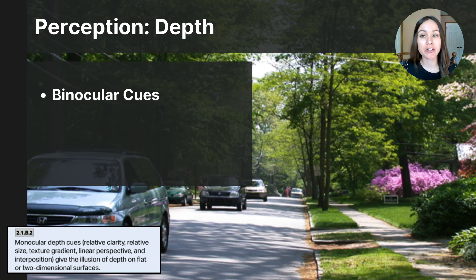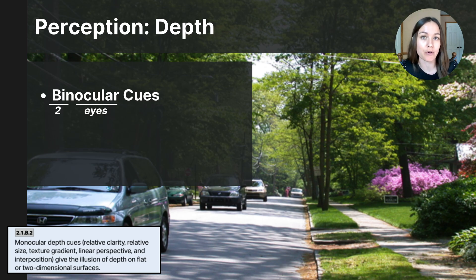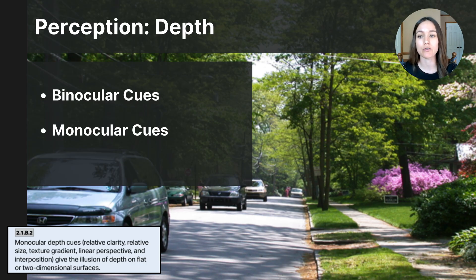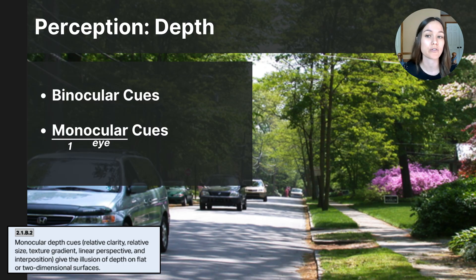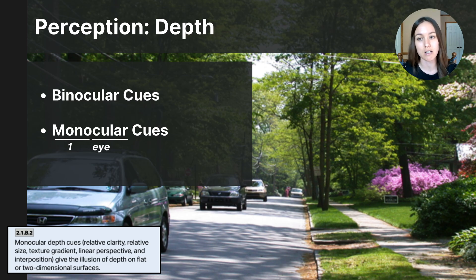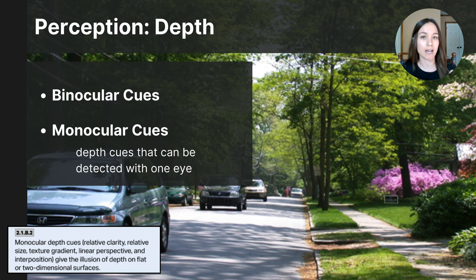You might be thinking: if binocular cues require two eyes, how am I able to tell that objects are farther away or closer with just one eye open? The brain uses binocular and monocular cues together to make sense of the environment. Breaking down the word monocular — mono means one, and ocular refers to the eye or the ability to see. Monocular cues are visual details in the environment that help us determine depth using just one eye, so two eyes are not necessary to determine the distance of objects.